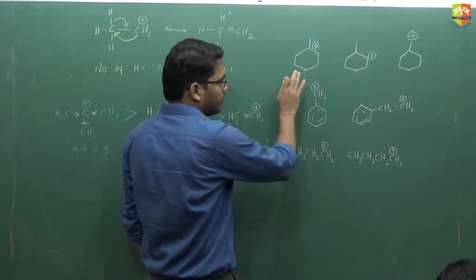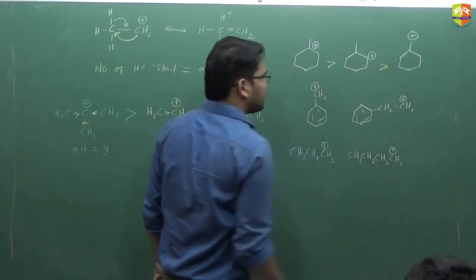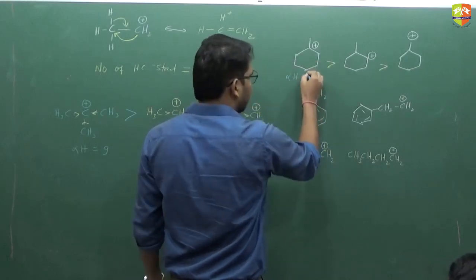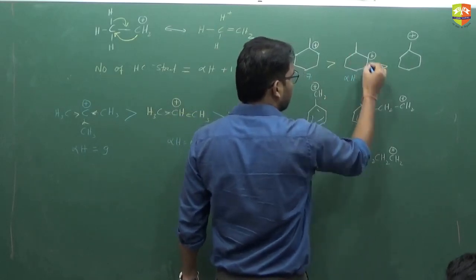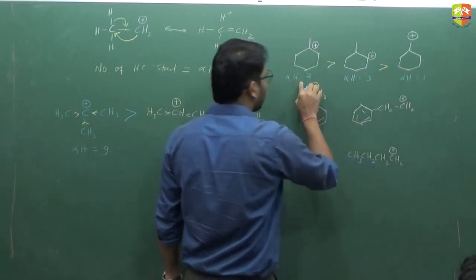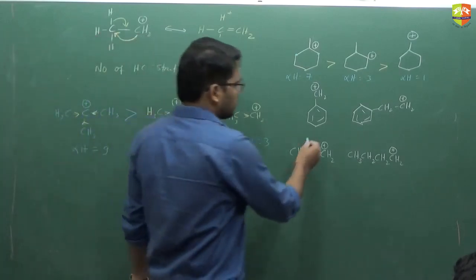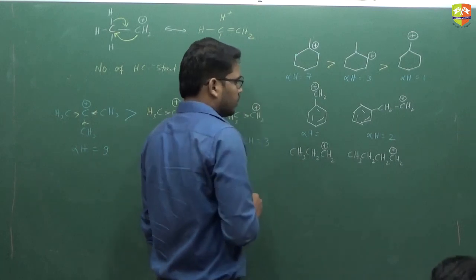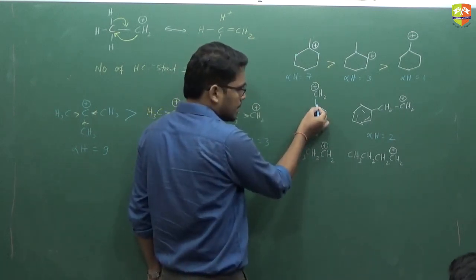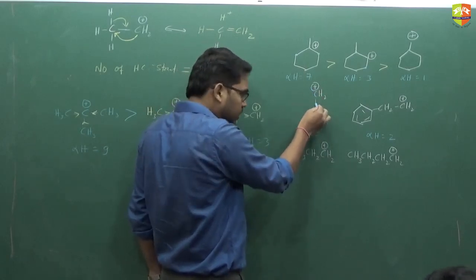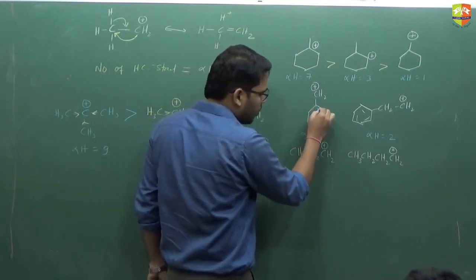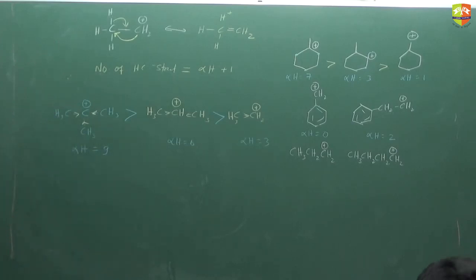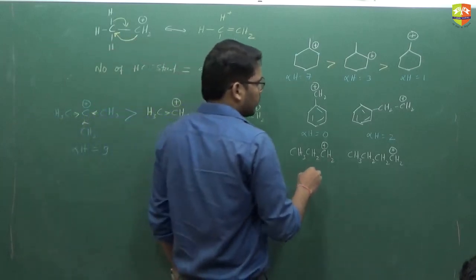For stability order: 3° > 2° > 1° carbocations based on I-effect. For hyperconjugation: the first structure has 4 + 3 = 7 alpha hydrogens, the second has 2 + 1 = 3, and the third has 1. The alpha carbon must be sp3 hybridized. In one structure, a double bond is already present, so counting hydrogens on that alpha carbon: there are none on the double-bond carbon — no hydrogen present there.